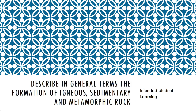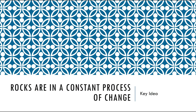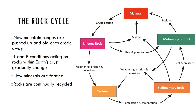You should now be able to describe in general terms the formation of igneous, sedimentary, and metamorphic rocks. We need to understand that rocks are in a constant process of change — this is the rock cycle, which you've probably seen before in a more simplified version. New mountain ranges are pushed up through tectonic forces and old ones erode and weather away. Temperature and pressure conditions acting on rocks within the earth's crust gradually change, and new minerals are formed through burial, uplift, chemical weathering, or physical weathering, so rocks are continually being recycled.